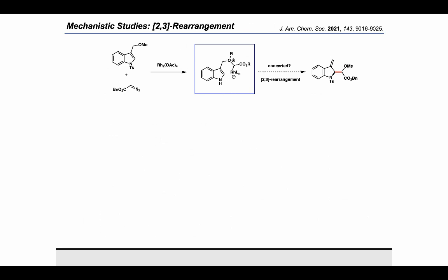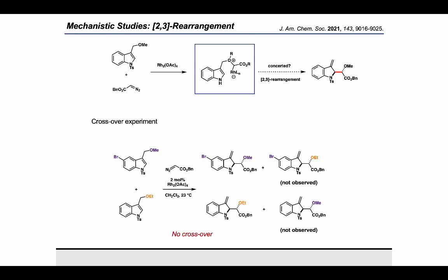After that, we decided to dive into mechanistic studies to understand the observed regiodivergence under different catalytic conditions. We first focused on the 2,3 rearrangement. The first thing we wanted to see was whether it went through a traditional concerted rearrangement pathway or a stepwise mechanism. For that, we performed a crossover experiment with a mixture of two different indole substrates under the optimized conditions, and we did not observe any crossover products, supporting a concerted pathway.